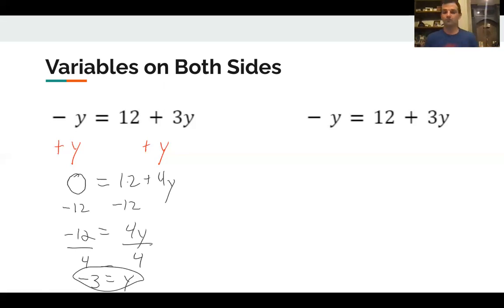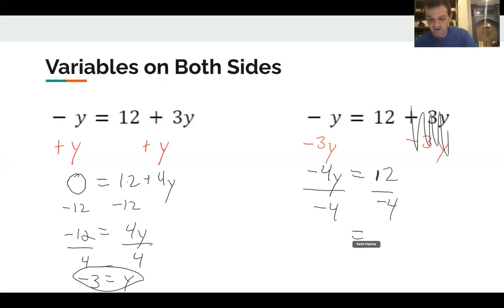But let's say I felt uncomfortable with that for whatever reason. I don't like that plus y leading to a zero. And instead, I've decided I want to get rid of the 3y. So what if I subtract 3y from both sides? Well, let's see what happens. Well, on the left-hand side, negative y, we're already down 1y minus 3y. We're down 4y total there. And then here, 12 and plus 3y minus 3y, that adds to zero. So we just have 12. And then we divide both sides by 4y or by 4, negative 4. And I get -4y divided by -4 is just y. 12 divided by -4 is -3. And so again, I get the correct answer that y is the value -3.